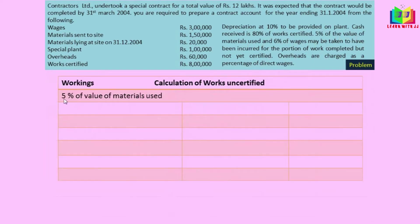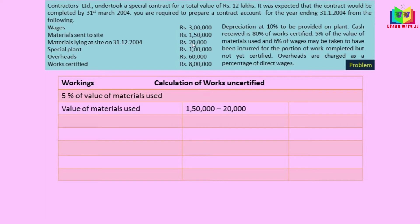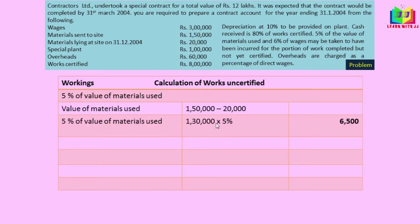First we have to calculate 5% of the value of material used. We need to find the value of materials used: 1 lakh 50,000 was the material sent to site, and materials at the end were 20,000, so material used was 1 lakh 30,000. On that 1 lakh 30,000, 5% gives us 6,500 — this is the 5% of value of material used.